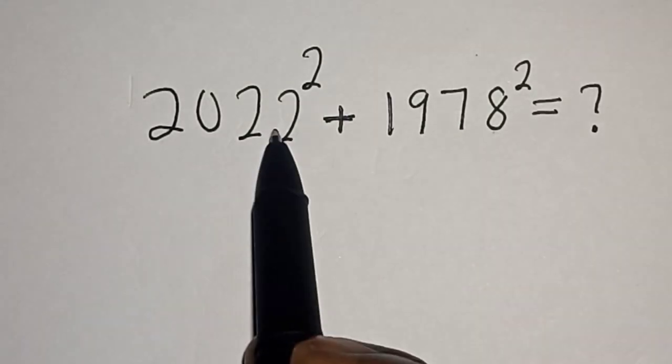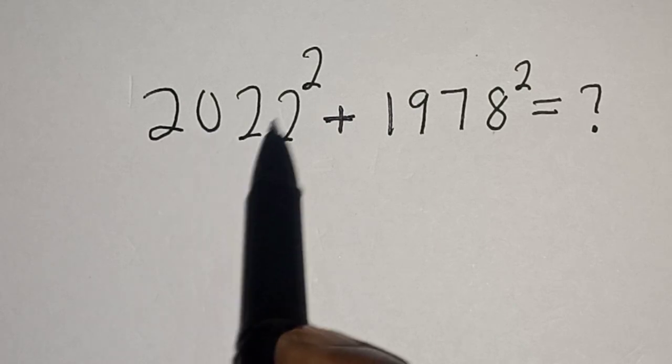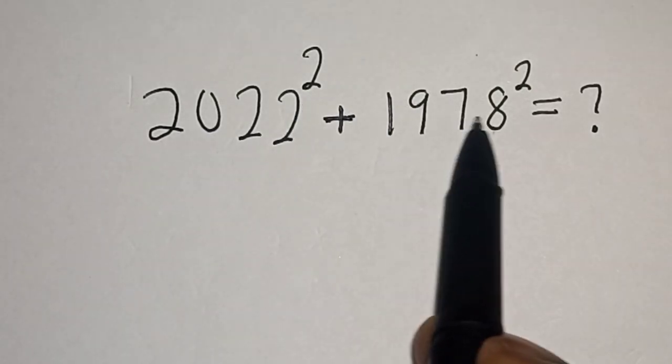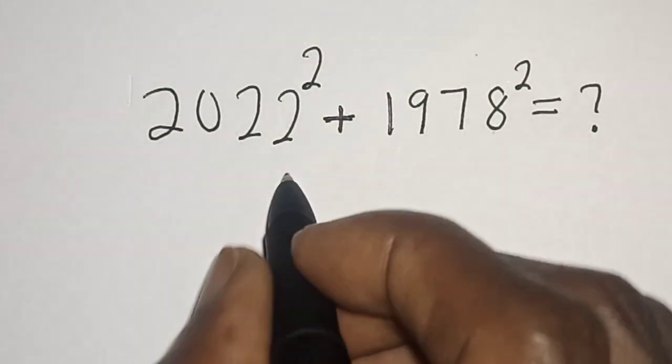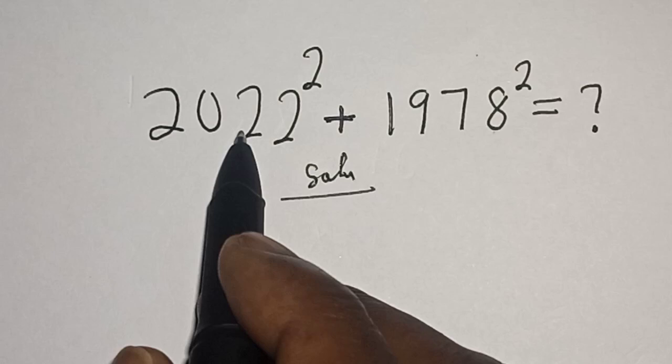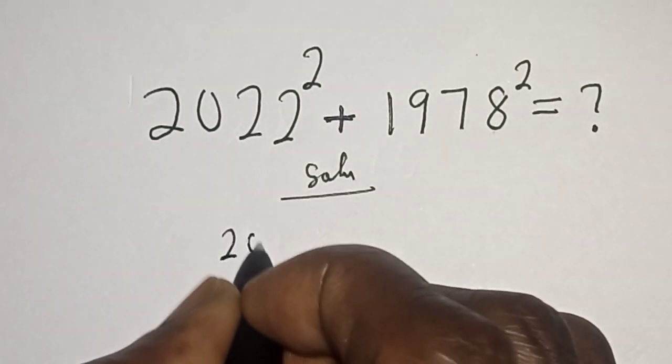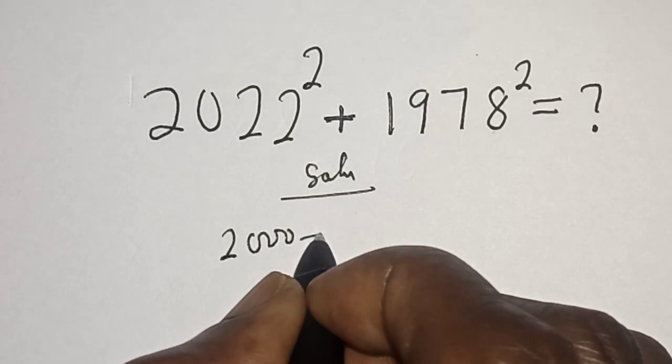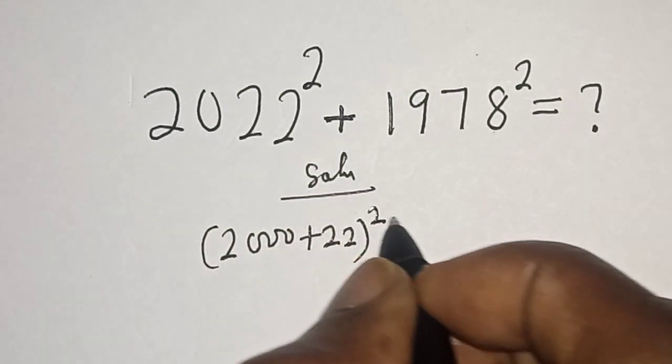Hello, welcome to Madges. In this class we want to simplify this nice math problem: 2022² + 1978². Like, share, comment and subscribe. Solution: 2022 can be written as (2000 + 22)².